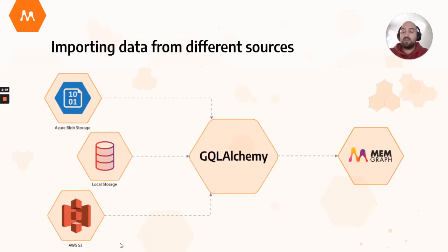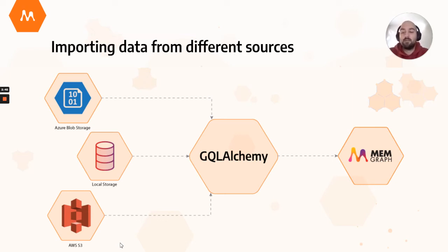You can now import data into your graph database directly from sources like Amazon S3, Azure Blob storage and local storage as well. Currently, we support reading from file formats such as CSV, Parquet, Arrow and many more using the PyArrow Python package. It's also possible to easily extend the importer with other data sources and file formats. If you end up implementing your own importer, why not make a pull request and we will add the feature to the next GQLAlchemy release.